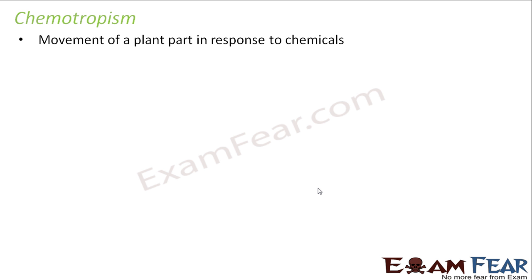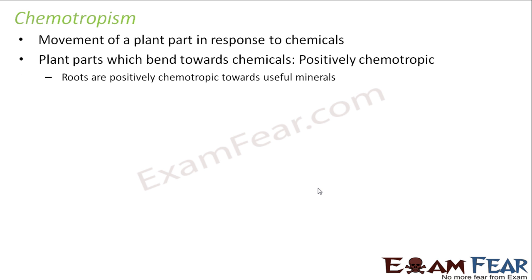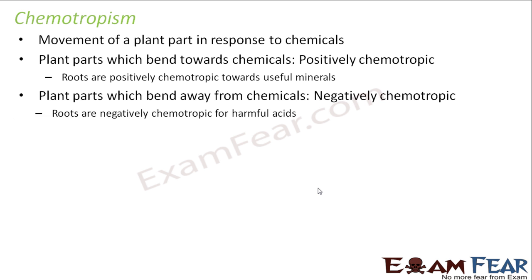The next tropic movement is chemotropism — movement of a plant in response to chemicals present in the soil. Plant parts which bend towards chemicals are positively chemotropic. Roots are positively chemotropic towards useful minerals like phosphorus and nitrogen, and negatively chemotropic towards harmful acids. So if roots grow towards chemicals, they are positively chemotropic; if they grow away from them, they are negatively chemotropic.